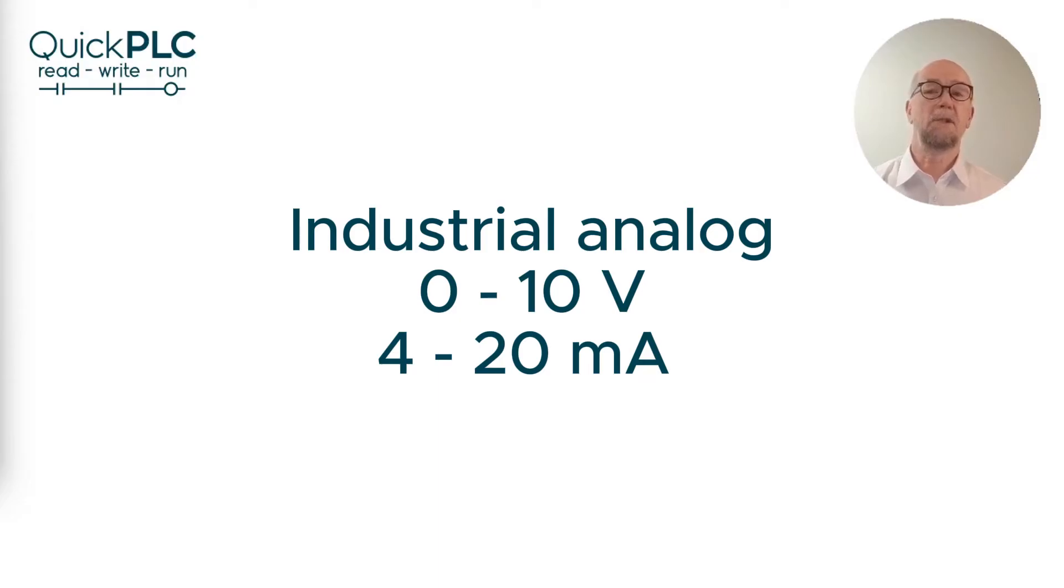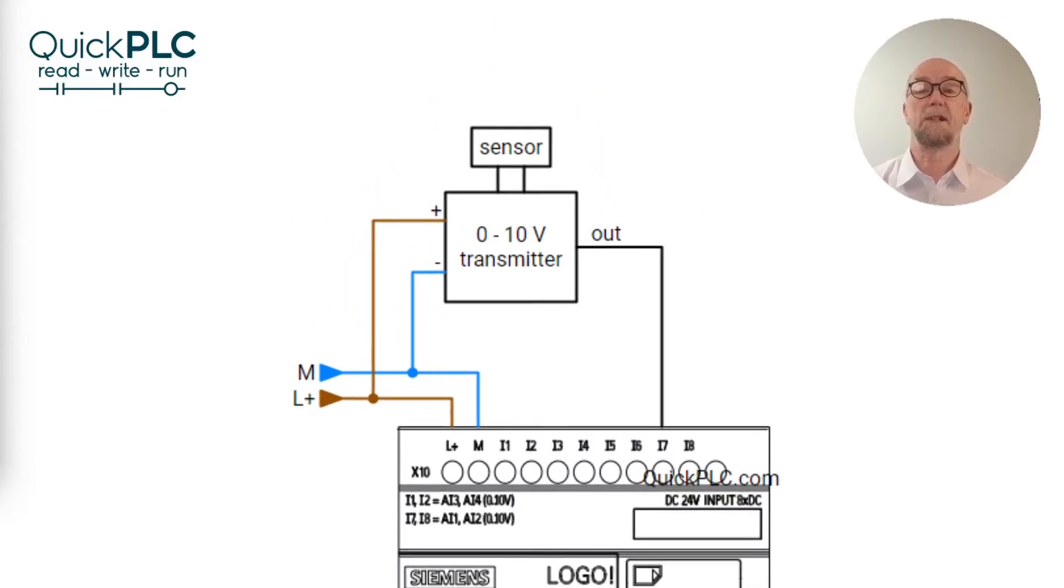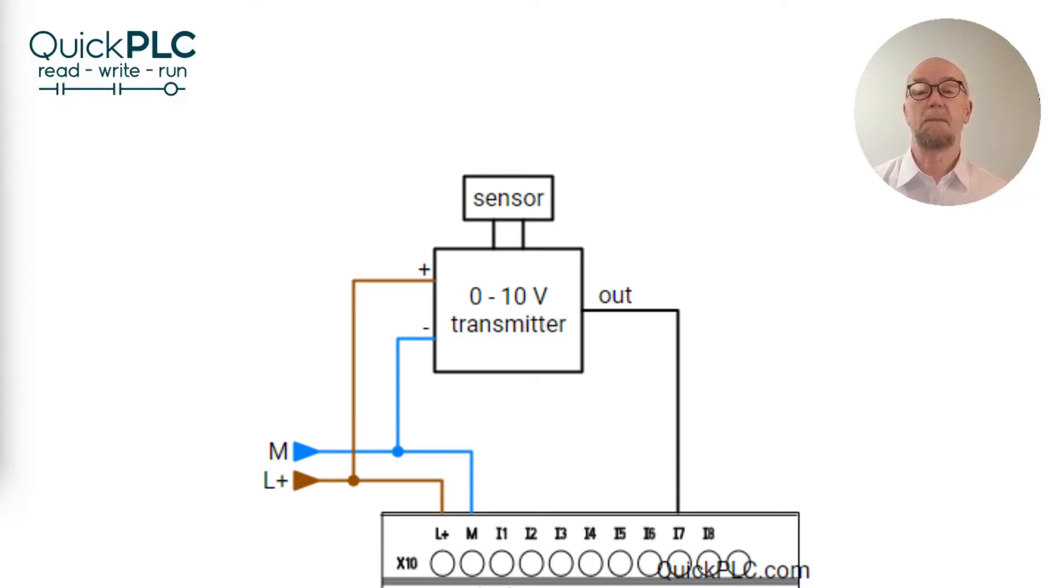The two most common standards for analog signals in industrial control are 0 to 10 volt and 4 to 20 milliamp. 0 to 10 volt sensors are wired up as shown. They're simple but have several disadvantages. They need three wires. The 0 to 10 volt signals are susceptible to electrical noise due to the high input resistance of the Logo's analog inputs and you can't tell the difference between a zero measurement and a disconnected sensor.